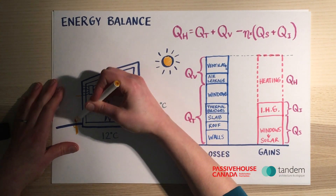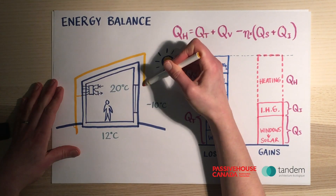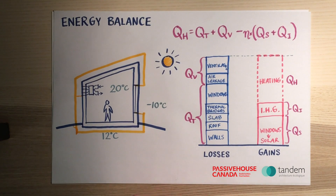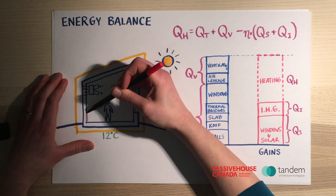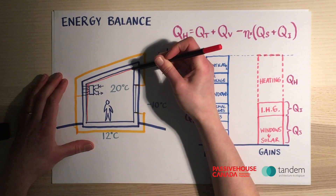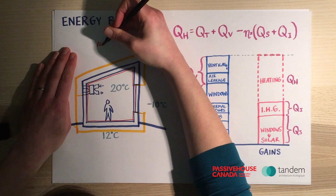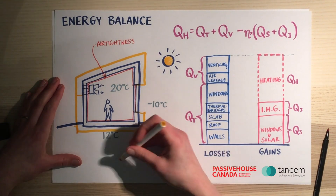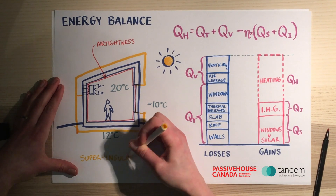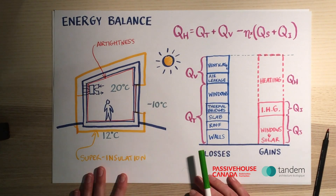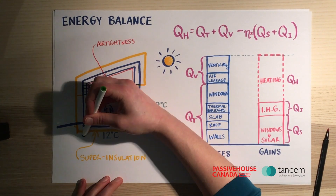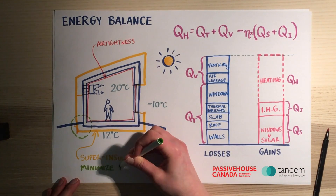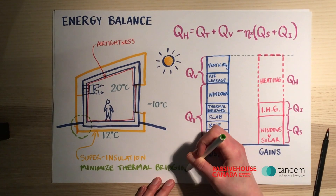There are a number of things we can do to improve our building performance. The first is to add insulation — we're going to reduce our losses through the walls, roof, and slab by improving the insulation value and by making sure that our envelopes are very airtight, which will reduce our air leakage. Then we'll minimize thermal bridges by looking at all of our details and optimizing them for airtightness.